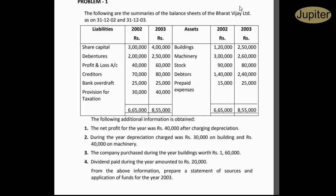Profit and loss: 4 lakhs and 5 lakhs. Profit and loss: 3 lakhs and 5 lakhs. Provision for taxation: 5 lakhs.